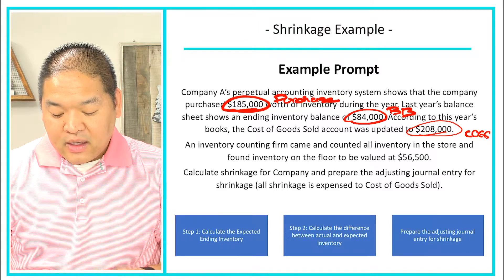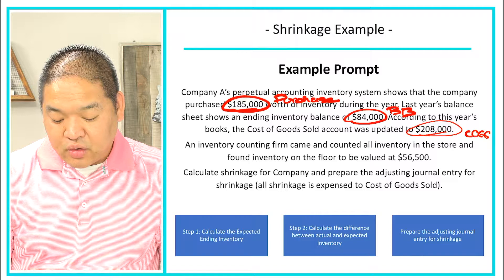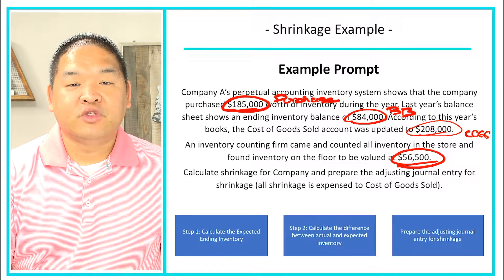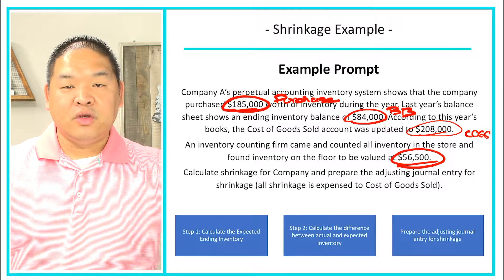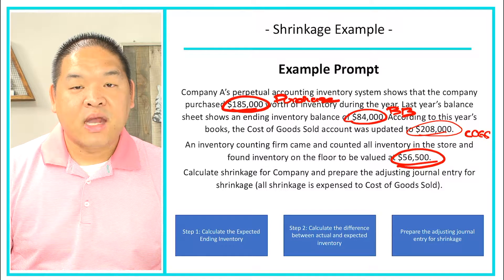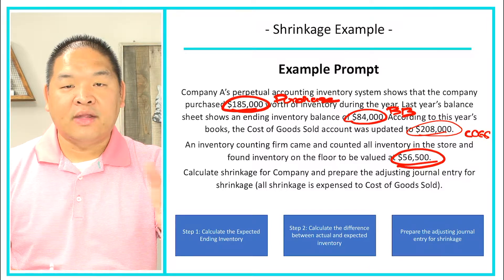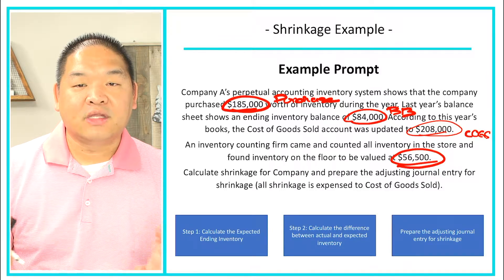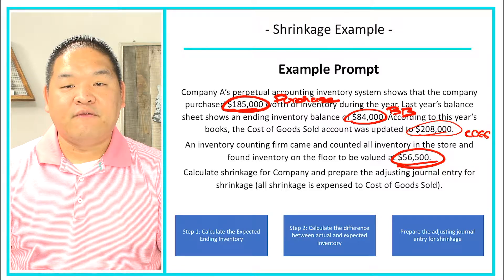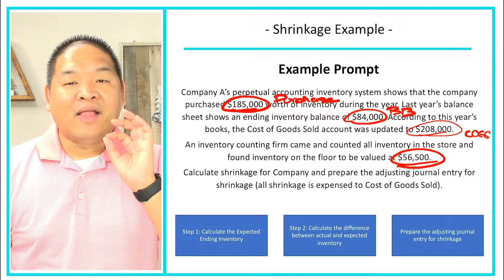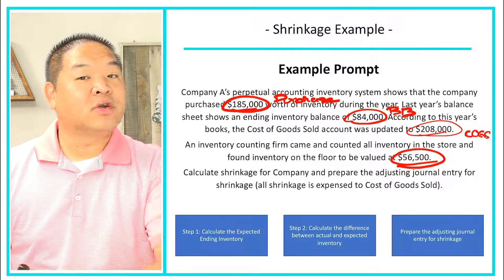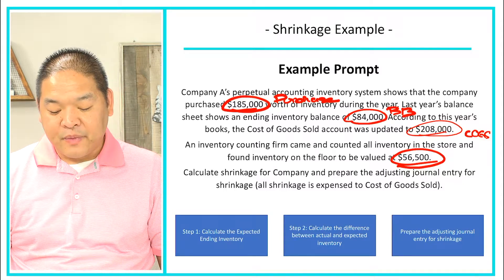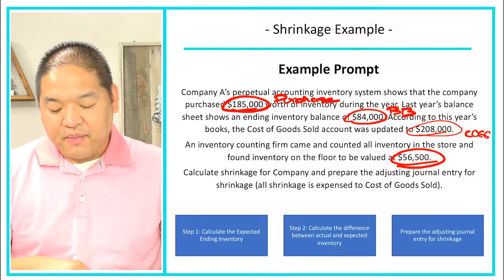An inventory accounting firm came and counted all the inventory in the store and found inventory on the floor to be valued at $56,500. This is what typically happens at big-box retailers like Walmart and Target — a specialized inventory firm comes in and counts everything. They counted $56,500 worth of merchandise at the company's cost, not retail prices.